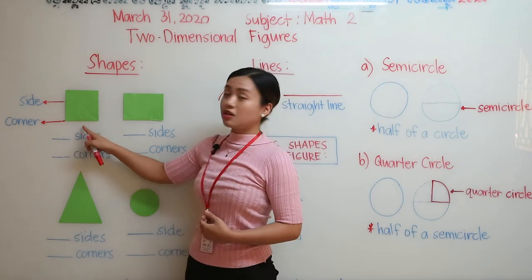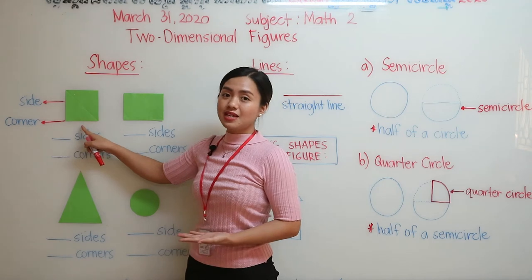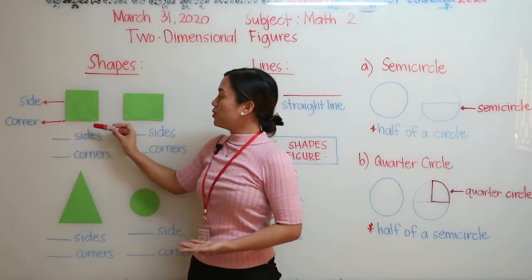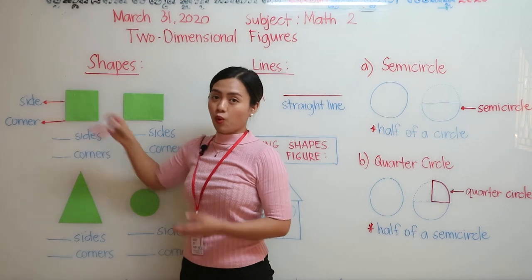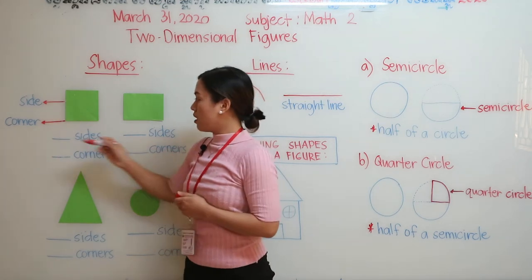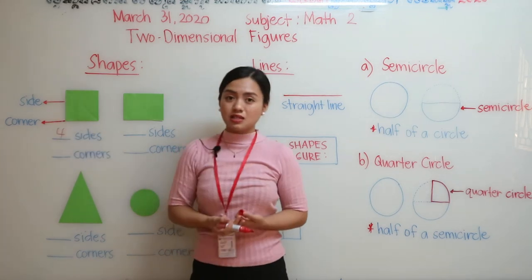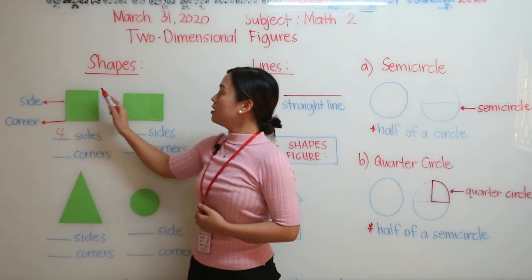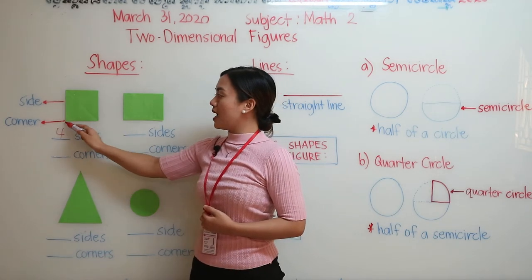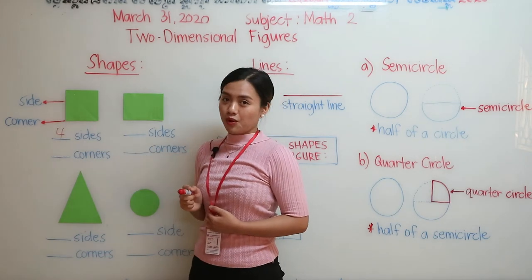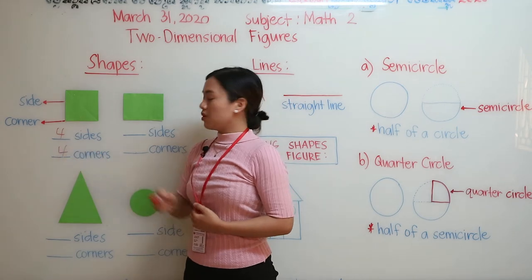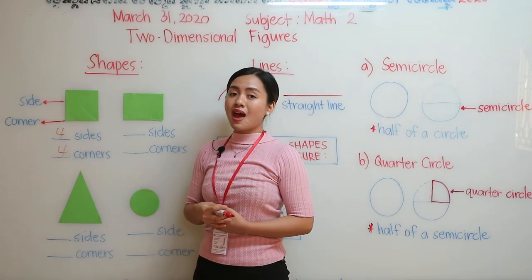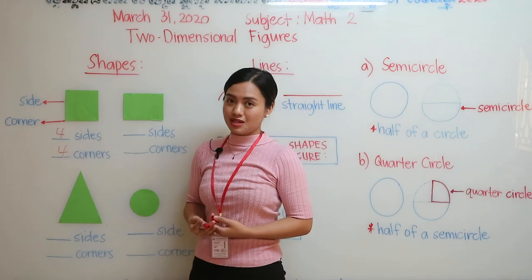So we have here a square. How many sides? We have one, two, three, and four — so there are four sides. How many corners? We have one, two, three, and four — so there are also four corners. Now squares have equal sides, students.